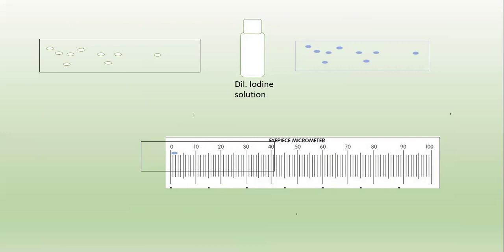Once we have stained the starch grains, consider a single starch grain and adjust the eyepiece micrometer so that the starting of the starch grain coincides with the eyepiece micrometer. The starting line is to be aligned with the starting of the starch grain. Count how many lines are there within the starch grain — we find one, two, three. These are three lines.